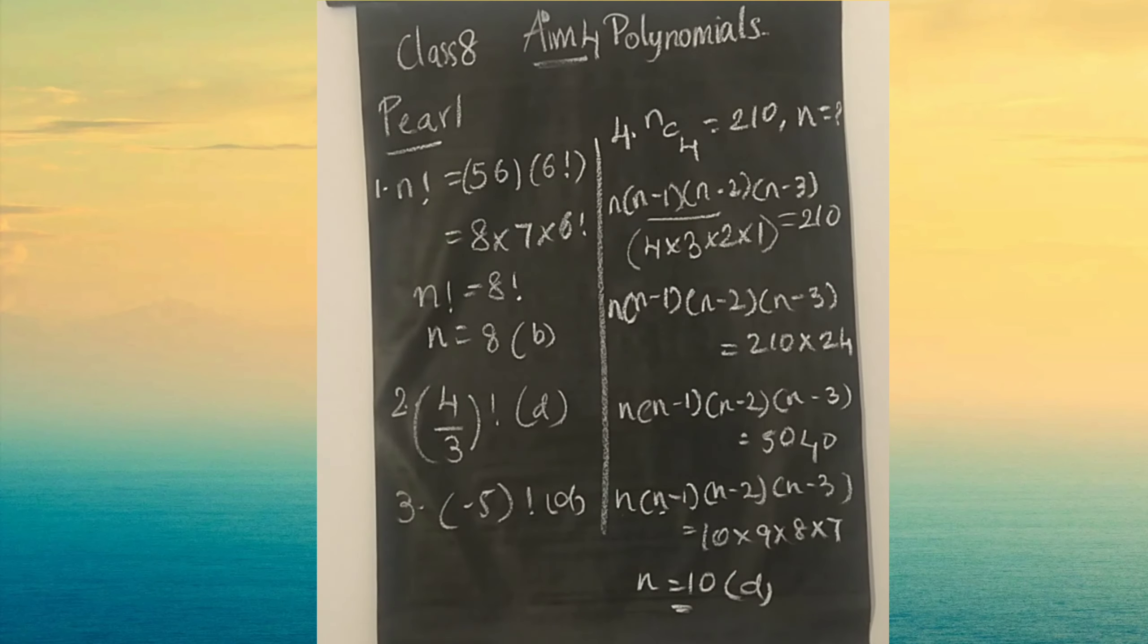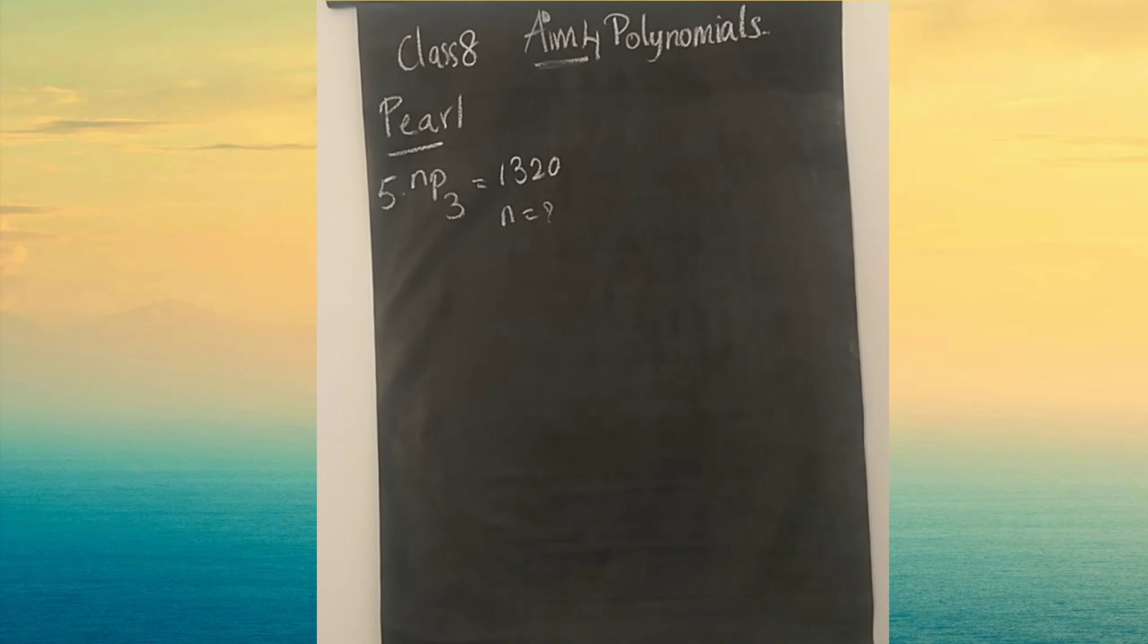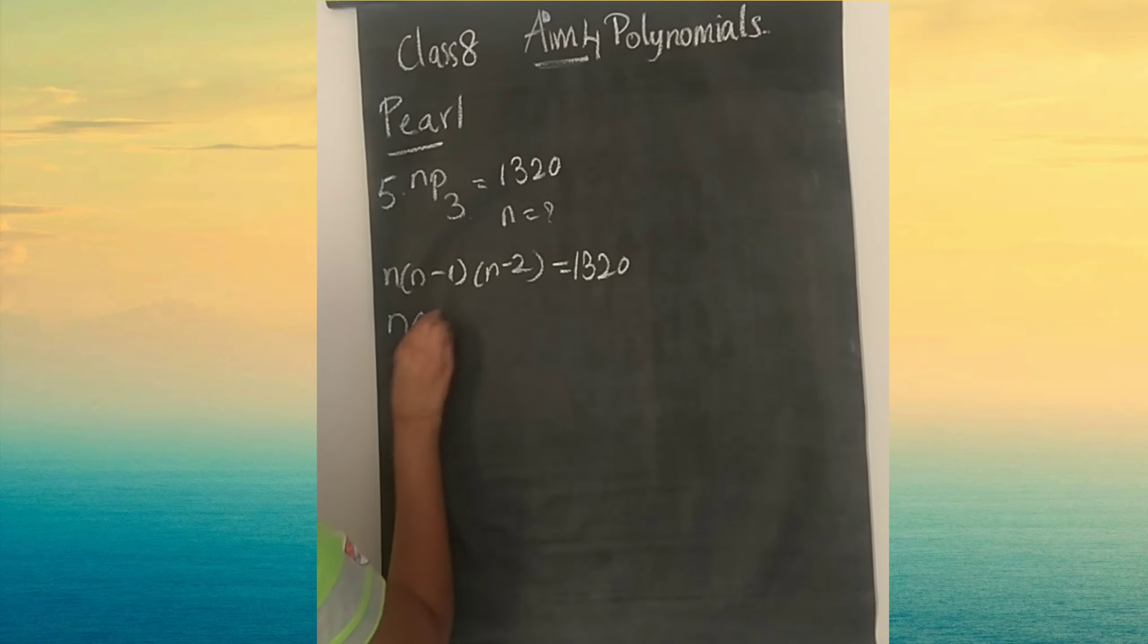Now let's look at the fifth question. Given data is nP3 equals 1320. We have to find the value of n. We will use the nP3 formula: n into n minus 1 into n minus 2 equals 1320.